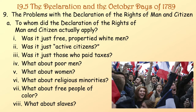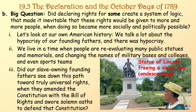Problems with the Declaration of the Rights of Man and Citizen: to whom did it actually apply? Was it just free, property-owning white men? Just active citizens? Just those who paid taxes? What about poor men, women, religious minorities, free people of color, or slaves? The big question: did declaring rights for some create a system of logic that made it inevitable that these rights would eventually be extended to more and more people, as it became more socially and politically possible?